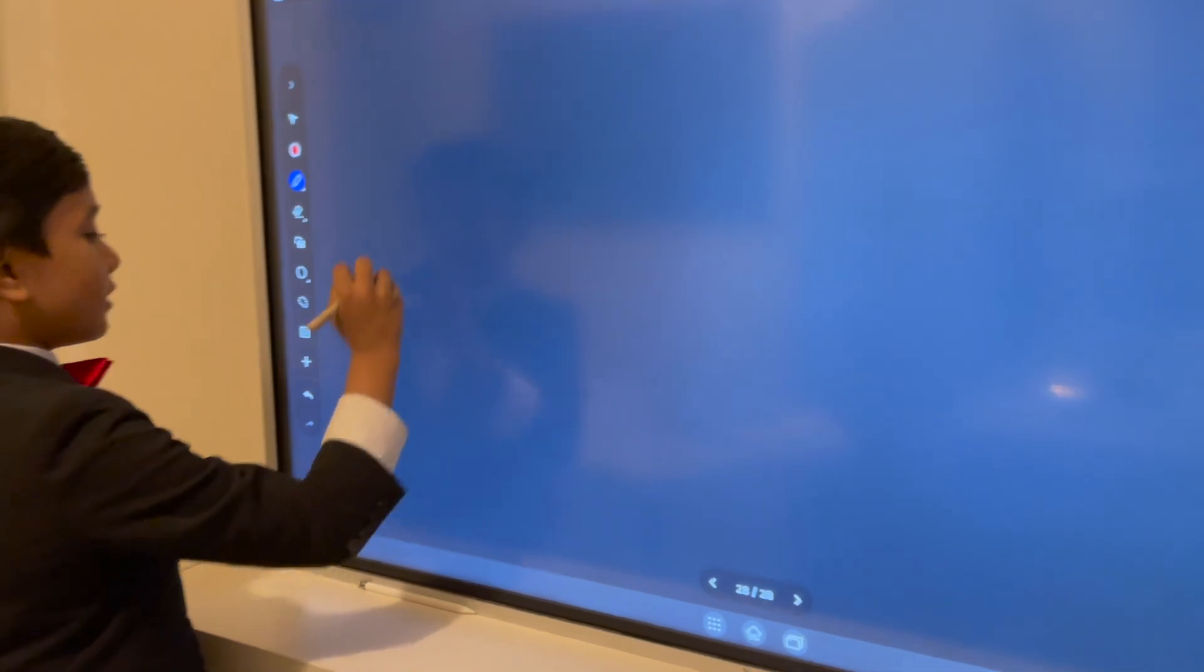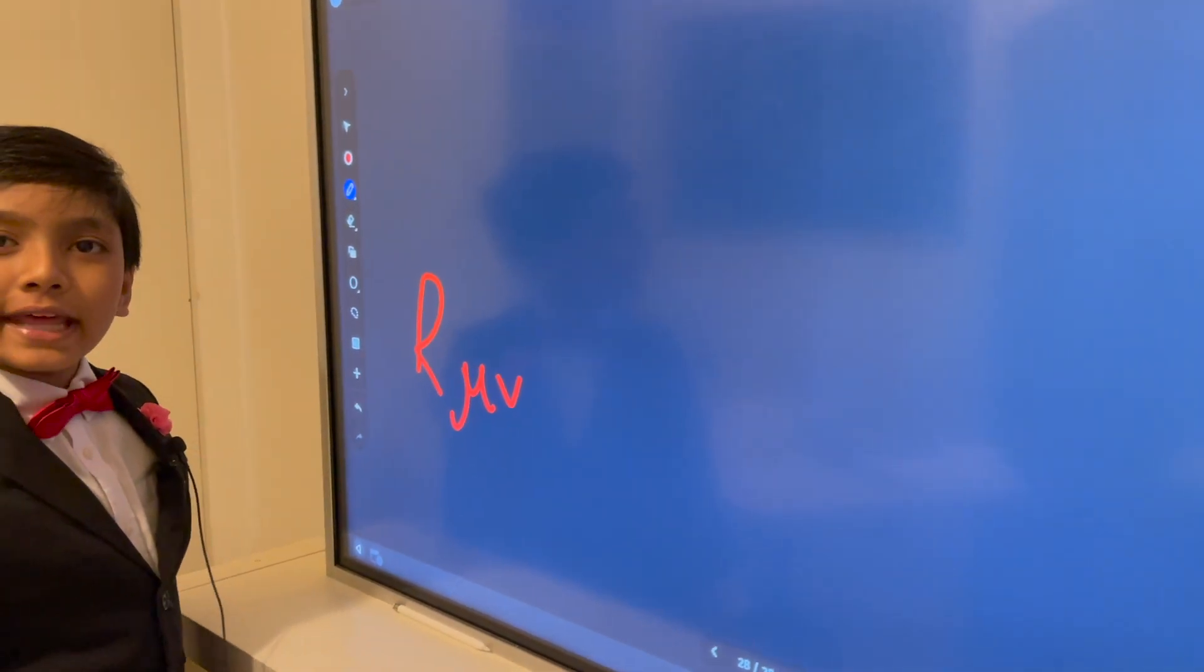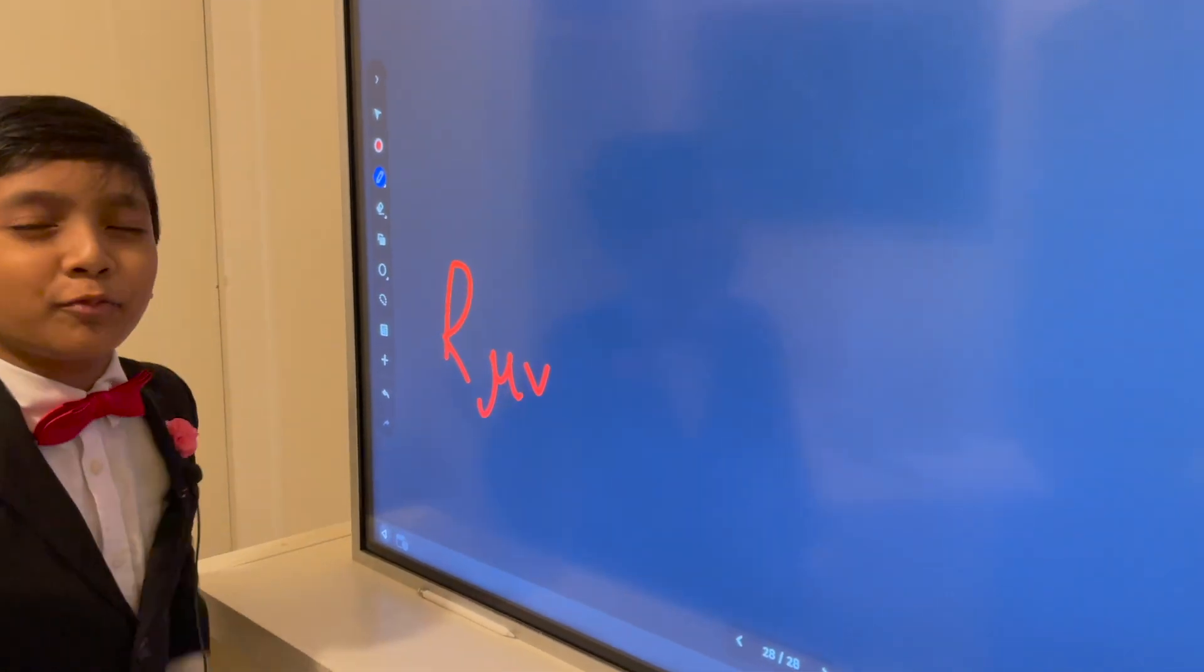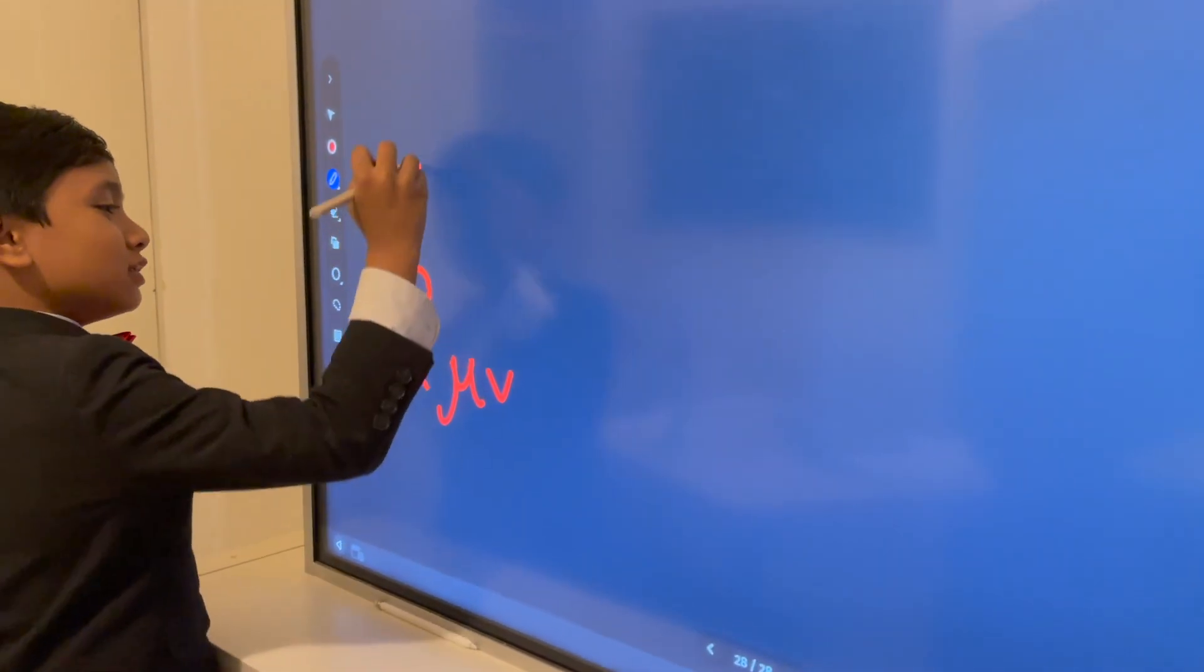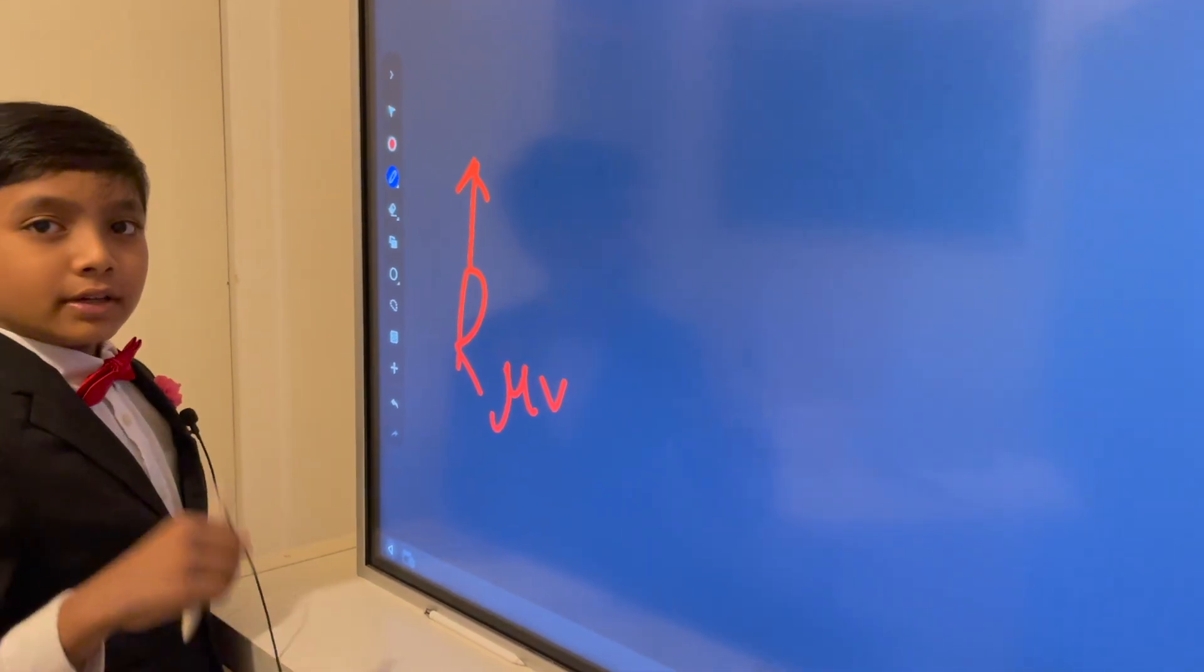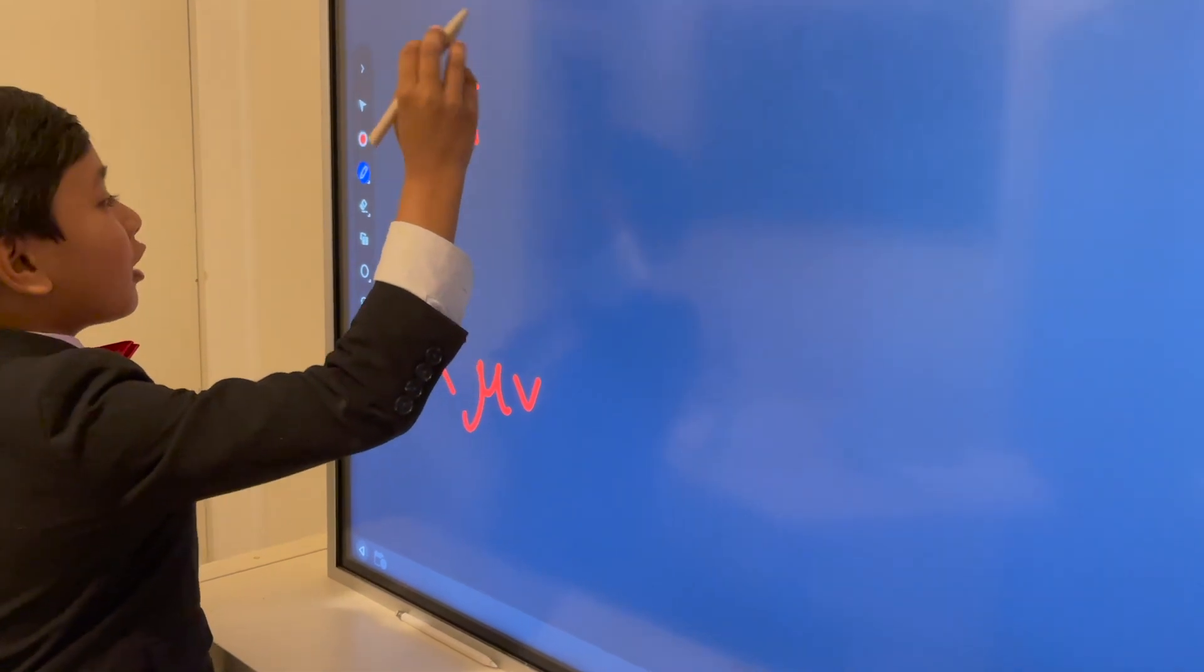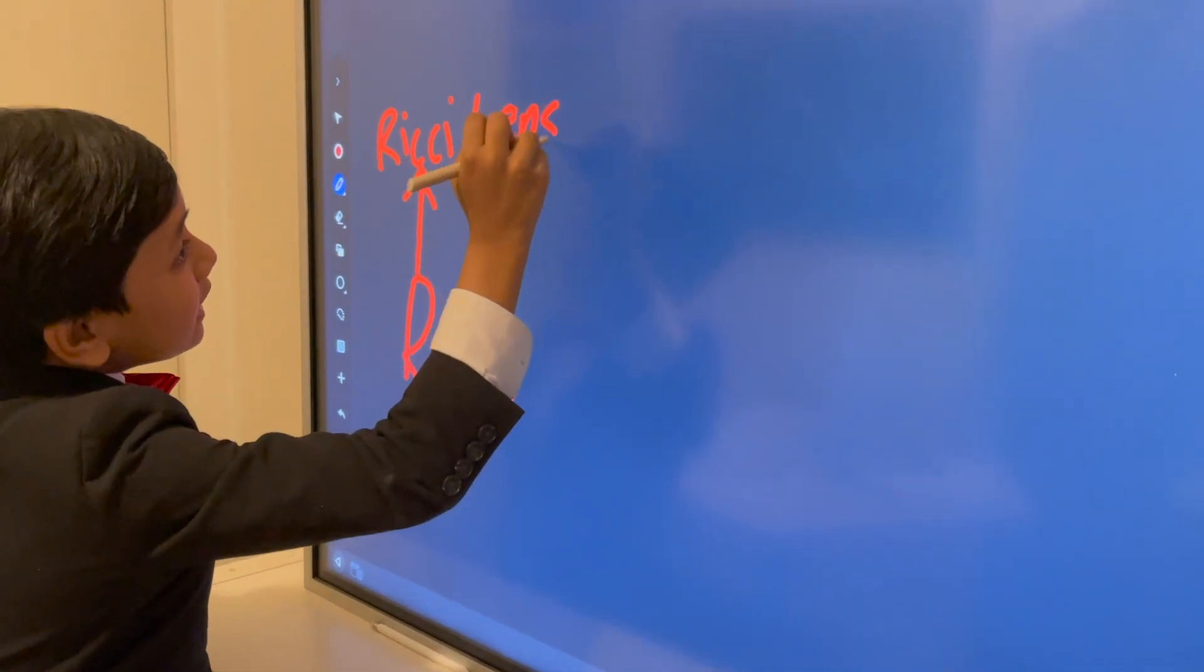So, Einstein's Field Equation. This is the Field Equation. R_μν, I have no idea how to pronounce it. It's like Americans and Brits. There's different pronunciations. So don't get mad at me in the comments. So R_μν, which is actually called the Ricci Tensor. The Ricci Tensor.